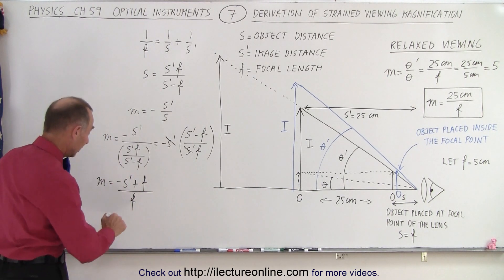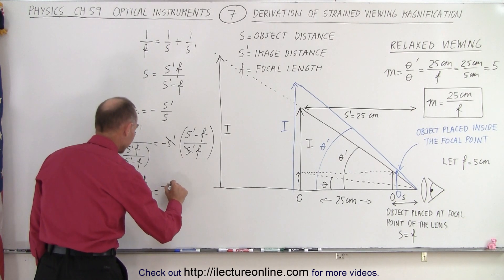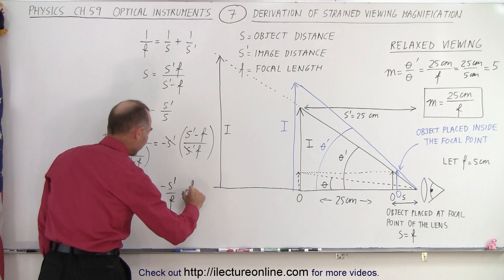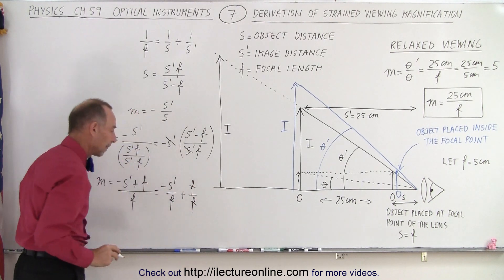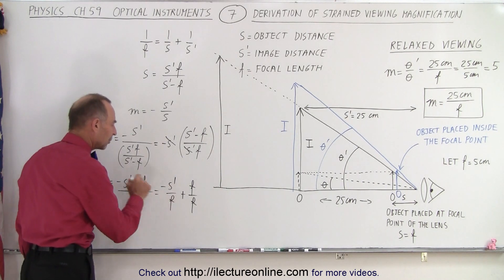Now, when we divide the denominator into the numerator, we get this to be equal to minus S prime over F plus F over F. Now, F over F of course is equal to 1, but what about minus S prime over F?